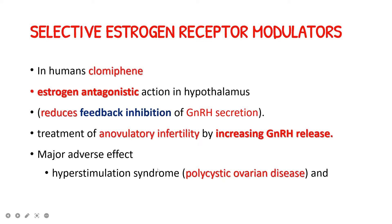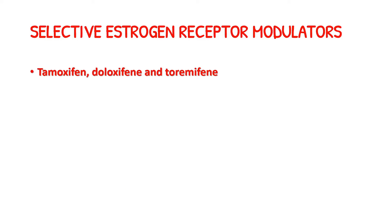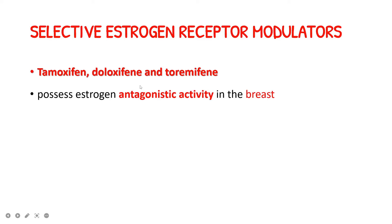The major side effects of clomiphene: since there is increased release of GnRH, there will be hyperstimulation syndrome. Constant stimulation leads to polycystic ovarian disease, which in turn can lead to multiple pregnancy. So remember: clomiphene is an estrogen receptor antagonist acting on the hypothalamus to reduce feedback inhibition of GnRH secretion, used in anovulatory infertility, with major side effects being polycystic ovarian disease and multiple pregnancy.